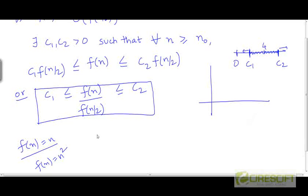Are there any functions for which the ratio of f(n) to f(n/2) cannot be constrained to lie between two constants? Is it possible that as n increases, the ratio of f(n) and f(n/2) also goes on increasing or arbitrarily approaching zero?